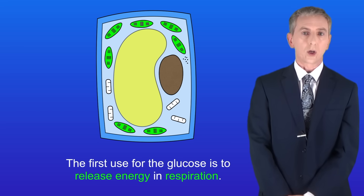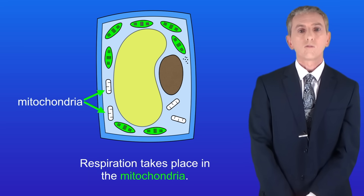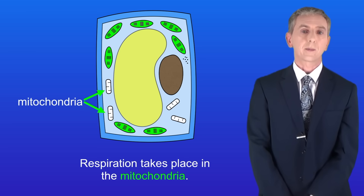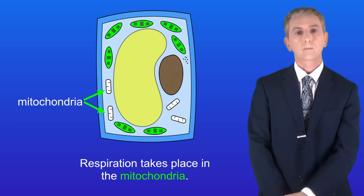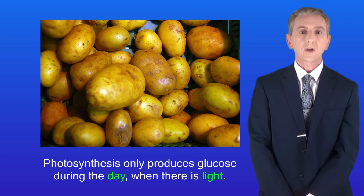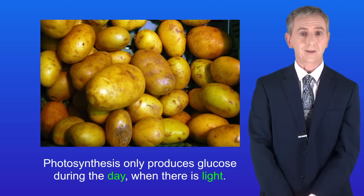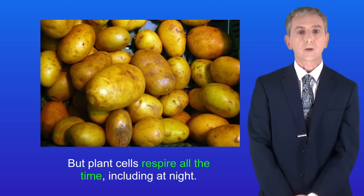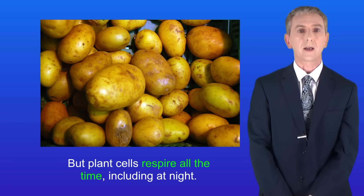The first use for the glucose is to release energy in respiration. Remember that respiration takes place in the mitochondria, and I'm showing you those here. Now remember that photosynthesis only produces glucose during the day when there's light, but plant cells respire all the time, including at night.